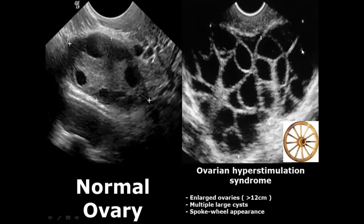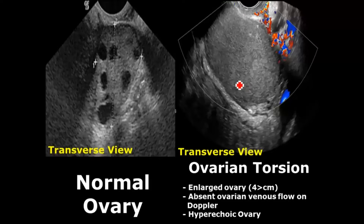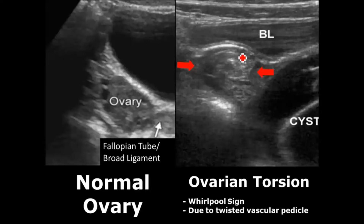In ovarian hyperstimulation syndrome, the ovaries are enlarged and could be more than 12 centimeters. In ovarian torsion, the ovary can appear enlarged — more than 4 centimeters — with absence of blood flow on Doppler. The ovary may also appear hyperechoic. A classic sign of ovarian torsion is the whirlpool sign: because the ovary is twisted, it gives a whirlpool-like appearance, made more prominent with Doppler.